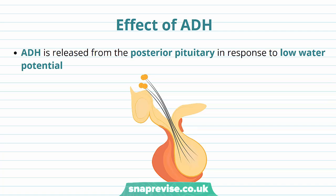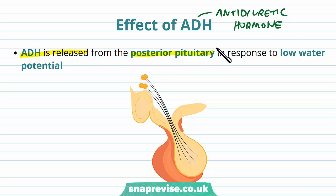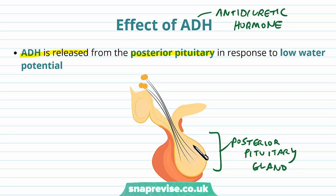ADH is a hormone that's released from the brain, and it stands for anti-diuretic hormone. The area it's released from is called the posterior pituitary gland, which lies below the brain, at the base of the brain. It's released in response to low water potential of the blood — so when we don't have enough water in the blood, or when we're thirsty.